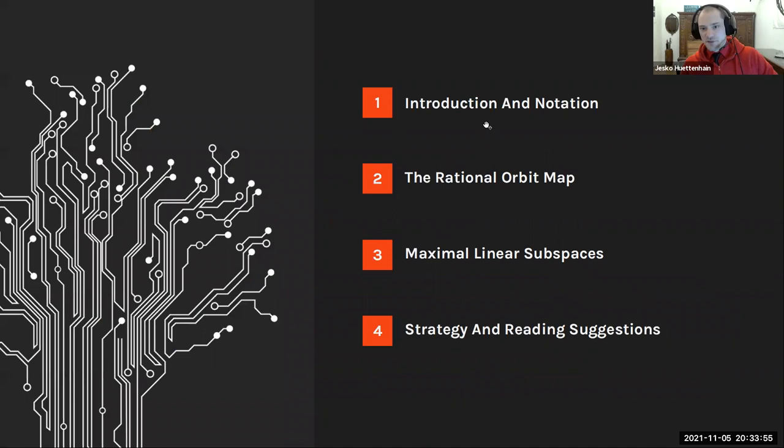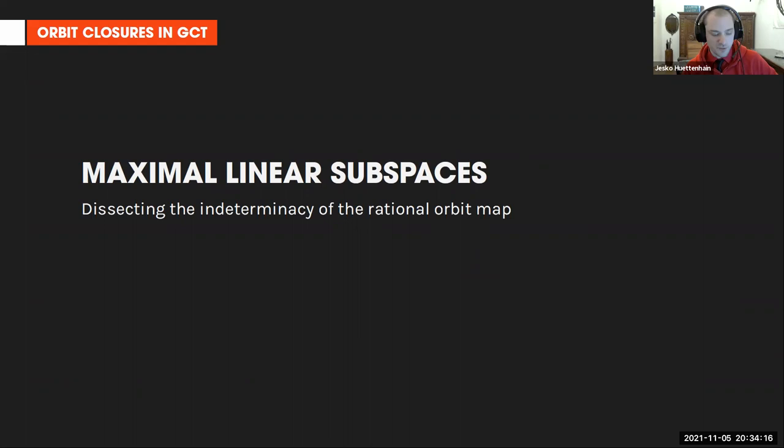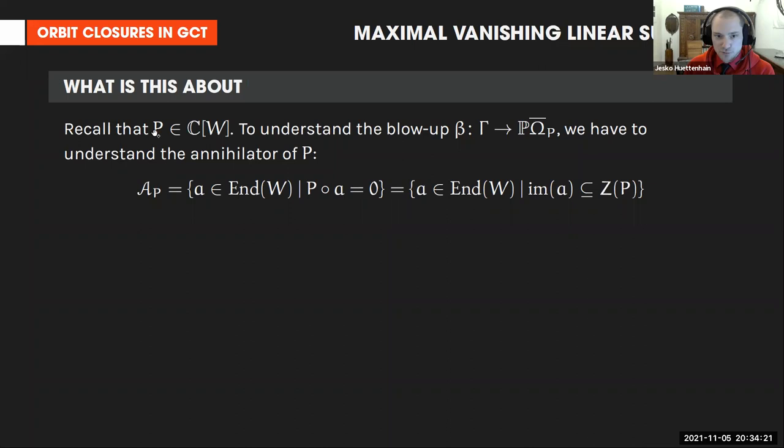We've covered introduction, notation, and the rational orbit map. Now I'll discuss maximal linear subspaces — this is what we need to better understand the blow-up, or 'dissecting the indeterminacy of the rational orbit map.' We have a polynomial and to understand the blow-up from Γ to P(End), we need to analyze the indeterminacy locus more carefully.